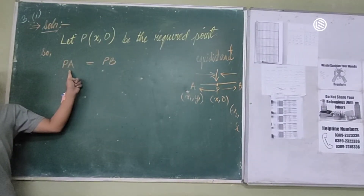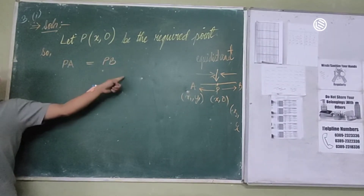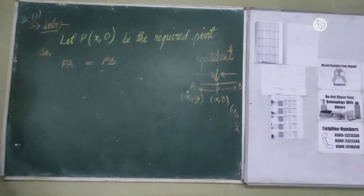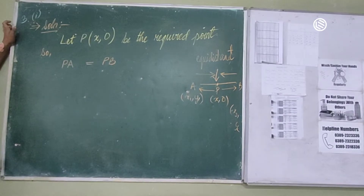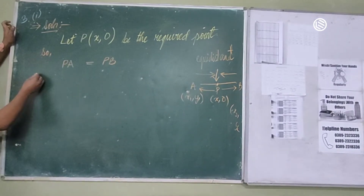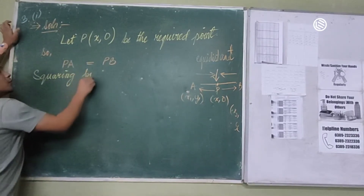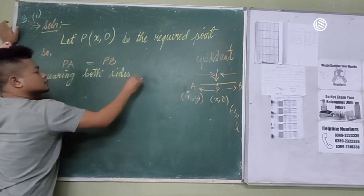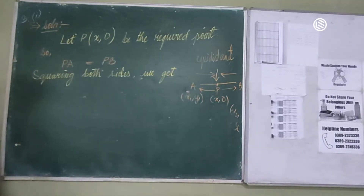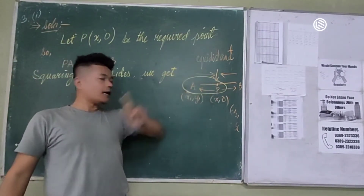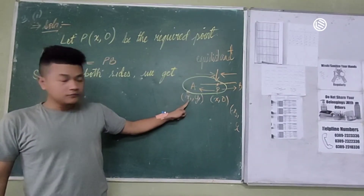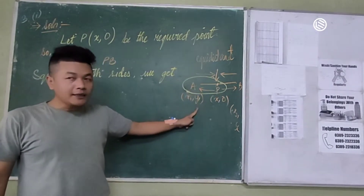Extra distance from P to A — distance from P to B — equal distance. So we get to use the distance formula: PA and PB. Squaring both sides. Distance formula, and relax PA. x1 minus x holding square plus y1 minus 0.